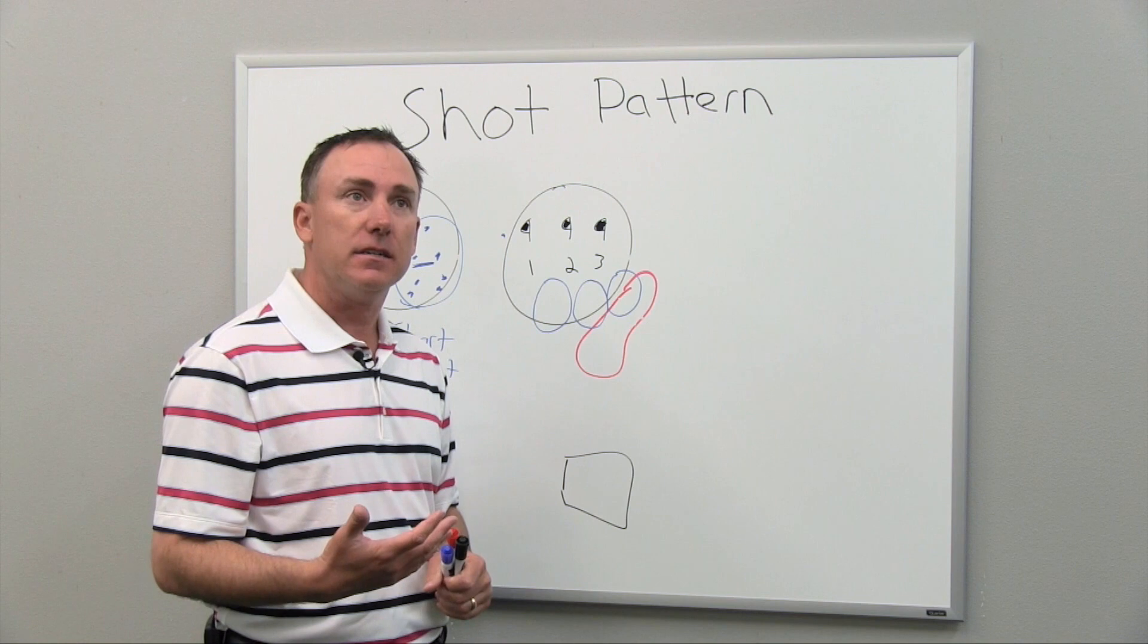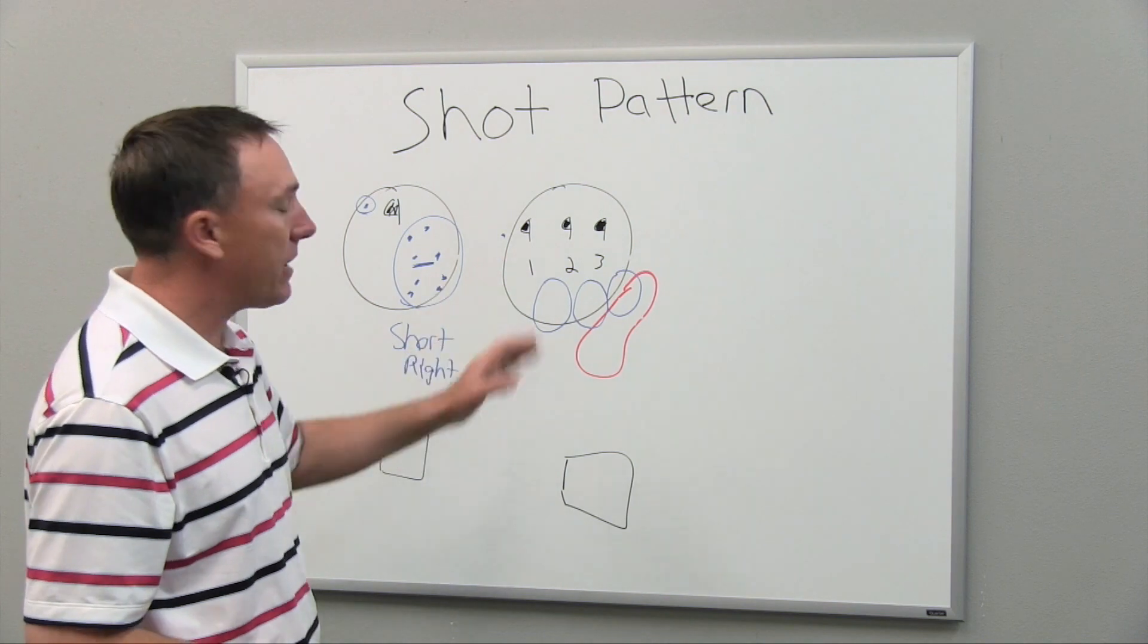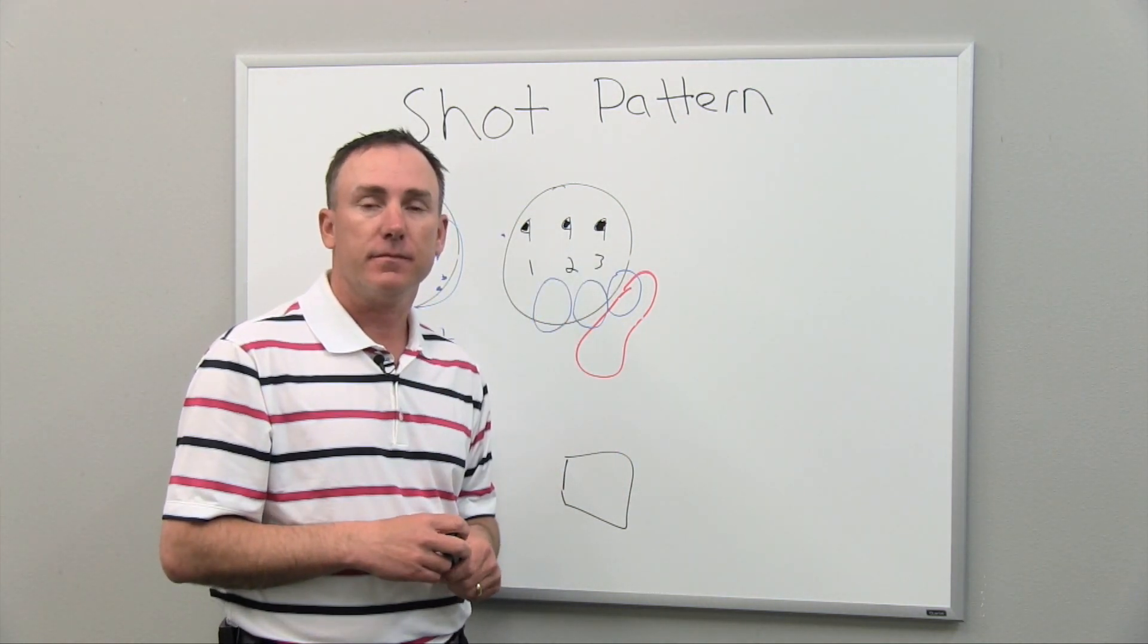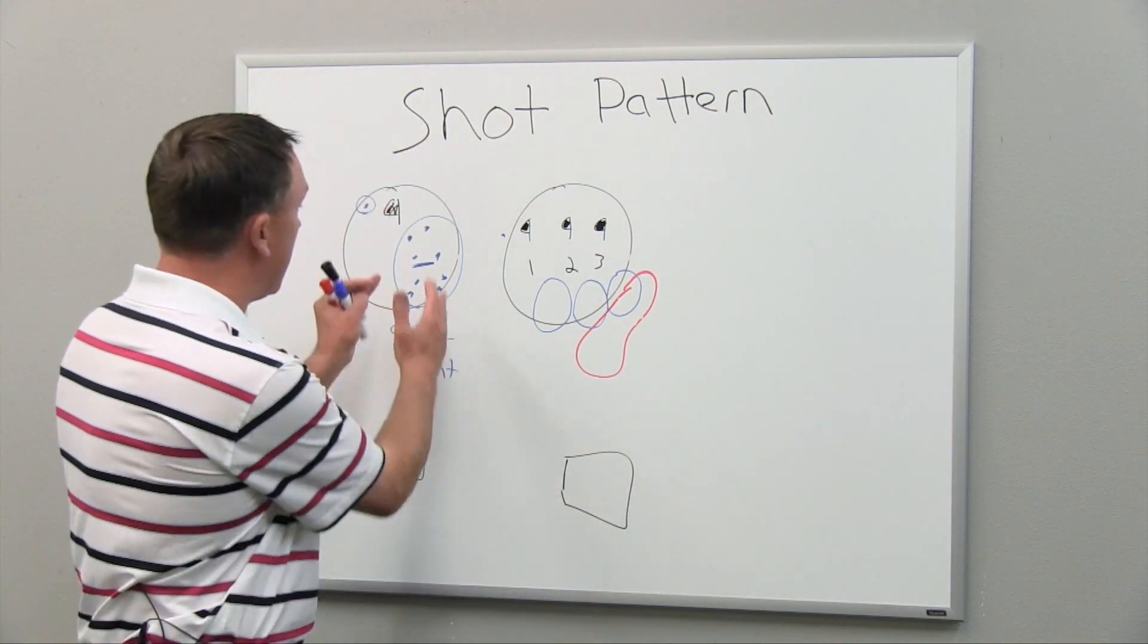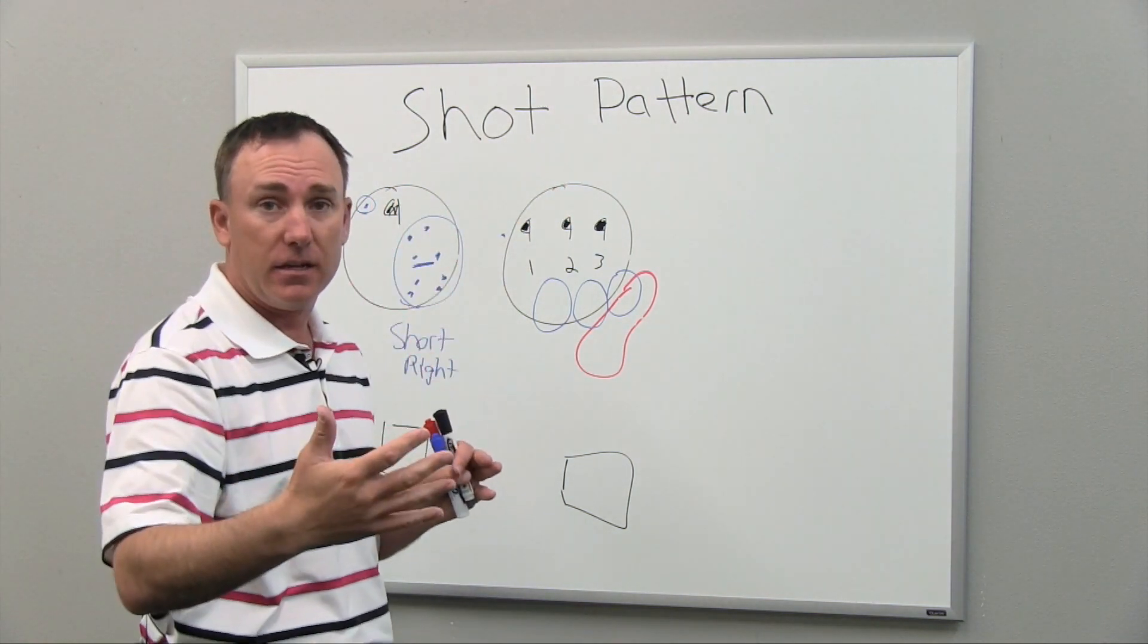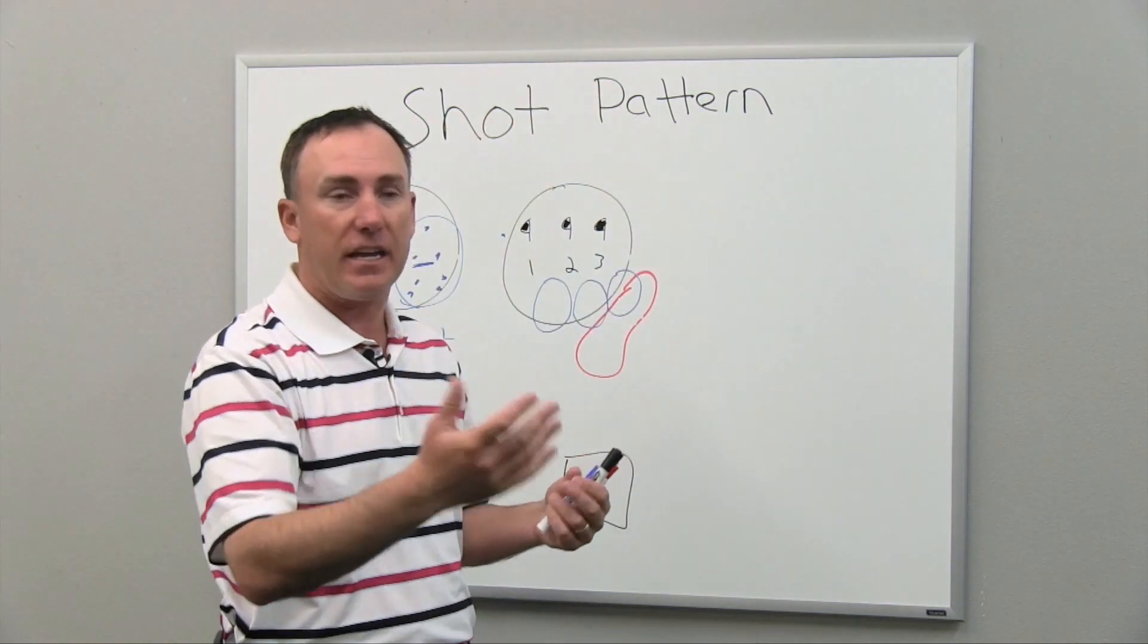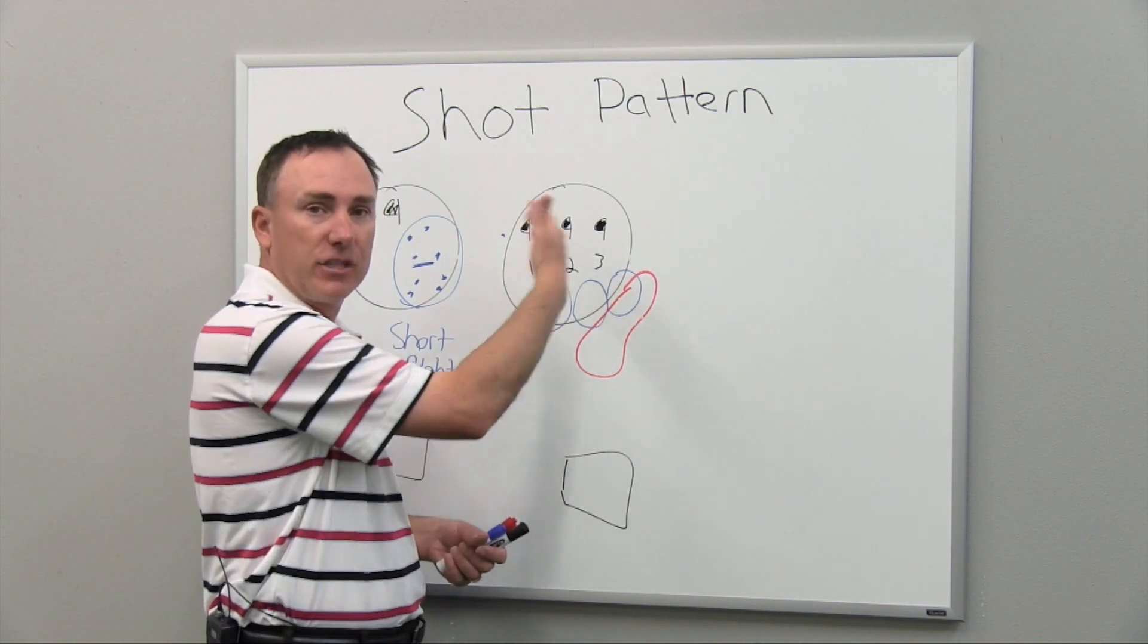So when you think about that, I want to ask you a question. Knowing what we've just talked about here, knowing our pattern, how often do you think you should aim right at the pin, no matter where it's at? The answer is hardly ever, because your pattern is not directly straight. It might be a little short and right like our example here. It could be long and left. It could be anything, but it's never directly straight. A pattern of golf shots is never directly straight. Even a great player like Freddie Couples, if he hits a high fade, he doesn't aim right at the pin. He aims to the left of the pin because he knows where his pattern of shots falls.